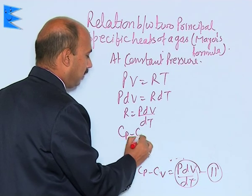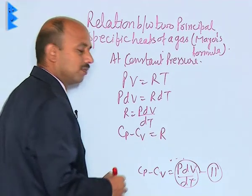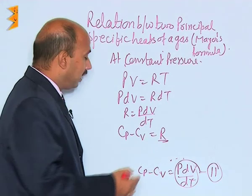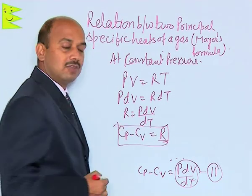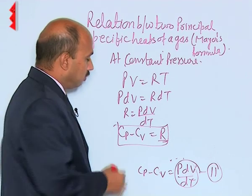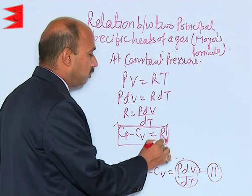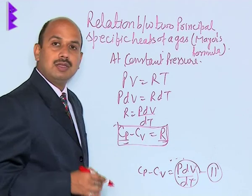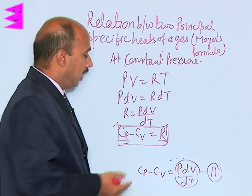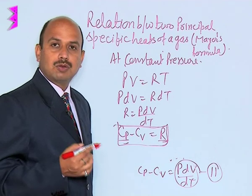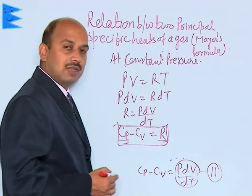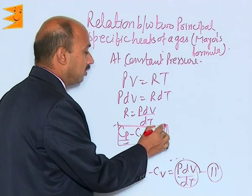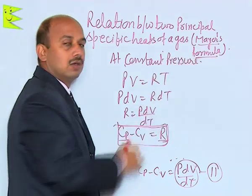This equation now becomes Cp minus Cv equals R. Since R has a positive value, we can say Cp minus Cv is greater than 0, therefore Cp is greater than Cv. This is the relation between the principal specific heats of gases. Cp is the molar specific heat at constant pressure, Cv is the molar specific heat at constant volume, and R is the universal gas constant. This formula is also known as Mayer's formula.